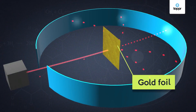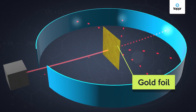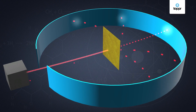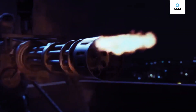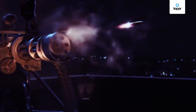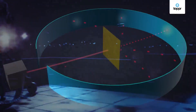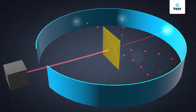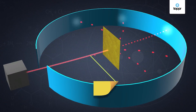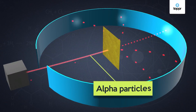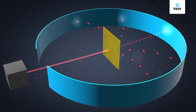Here, a thin sheet of gold is being bombarded by thousands of super fast moving particles — pretty much like bullets being fired from a gun. These particles are positively charged and are called alpha particles.